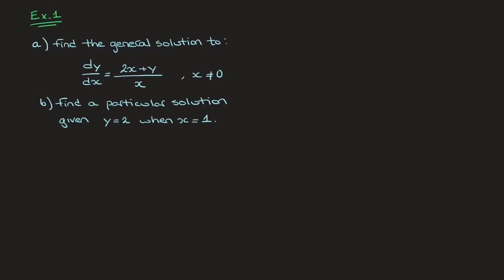Given a differential equation dy/dx which equals some function of x and y, such that the equation can't be rearranged to separate the variables, then if we can write or at least think of this function of x and y as a function — which I'll call g of y over x — then we say that this equation is a homogenous differential equation.